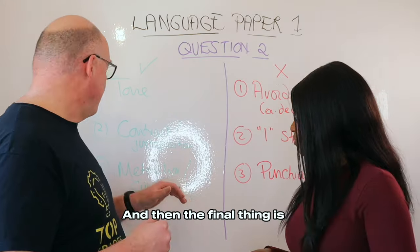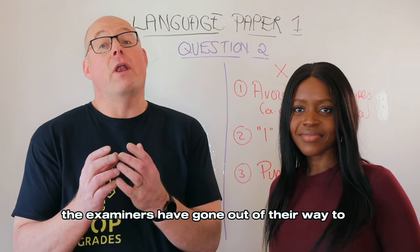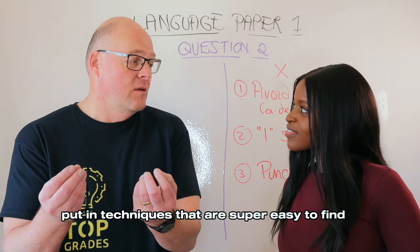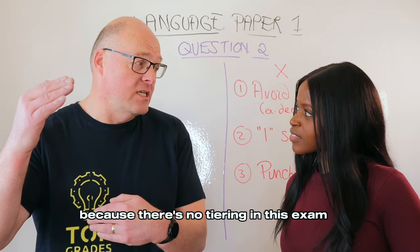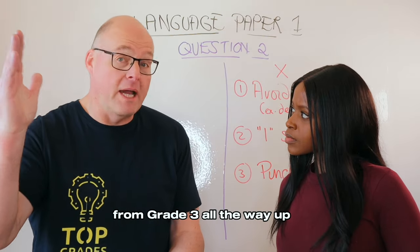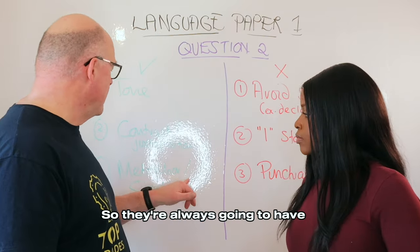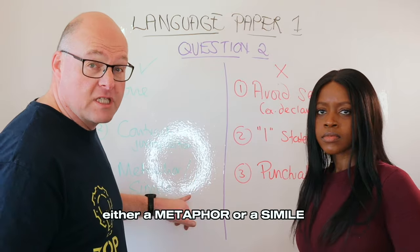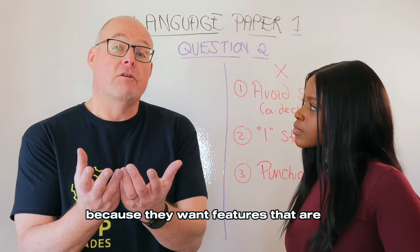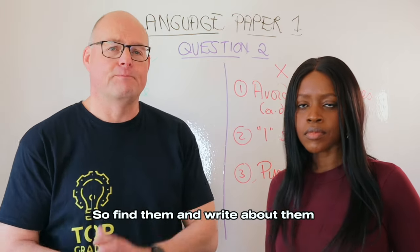The final thing is that examiners have gone out of their way to put in techniques that are super easy to find, because there's no tiering in this exam — everybody has to do it from grade one all the way up. So they're always going to have either a metaphor or a simile, probably both, because they want features that are easy for you to write about. So find them and write about them.